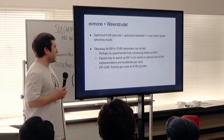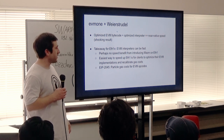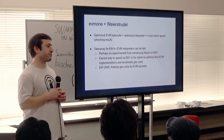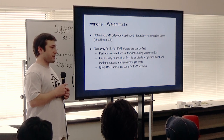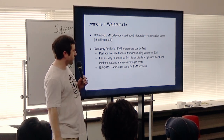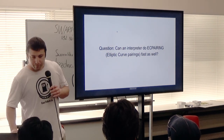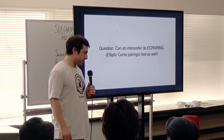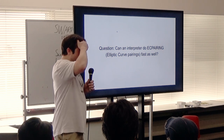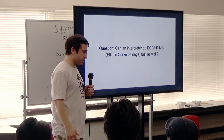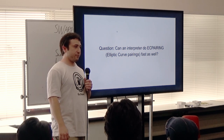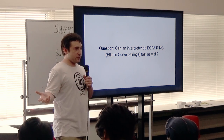It could be even faster, because it was optimized for gas cost — it uses MOD and MODS which are actually slower in EVM. If implemented to be fast EVM, it would be 2x faster, right on par with native parity speed. Once this sunk in, we basically realized that EVM interpreters can be fast and there's perhaps no speed benefit from introducing WASM on Eth1. This motivated us to propose EIP 2045 — particle gas costs.